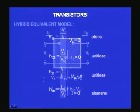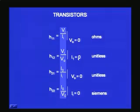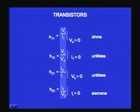Similarly, H12 — the second constant — is evaluated when II equals zero. When II is zero, that term vanishes, and H12 equals VI divided by VO when II equals zero. When II equals zero, the input is open-circuited (infinite input resistance). At that time H12 equals VI by V-output. Since it relates two voltages, H12 is dimensionless — it has no units.